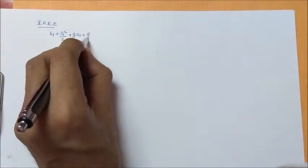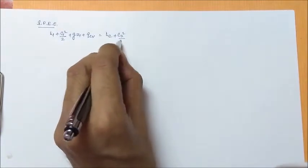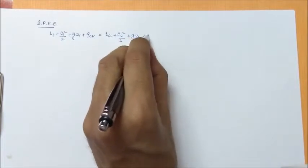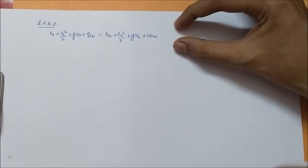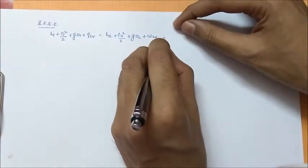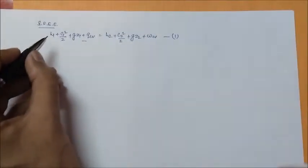We have the steady flow energy equation as H1 plus C1 squared by 2 plus gZ1 plus Q_CV equal to H2 plus C2 squared by 2 plus gZ2 plus W_CV. This is the steady flow energy equation which we derived in our previous video. Put this as equation 1.